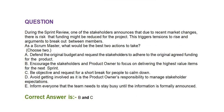Next question: during the sprint review, one of the stakeholders announces that due to recent market changes, there is a risk that funding might be reduced for the project. This triggers tensions to rise and arguments to break out between members. As a scrum master, what would be the best two actions to take? Choose two options. Option A: defend the original budget and request the stakeholders to adhere to the original agreed funding for the product. Option B: encourage the stakeholders and product owner to focus on delivering the highest value items for the next sprint. Option C: be objective and request a short break for people to calm down. Option D: avoid getting involved as it is the product owner's responsibility to manage stakeholders' expectations.